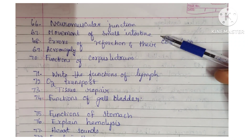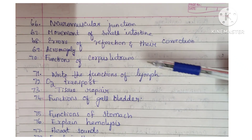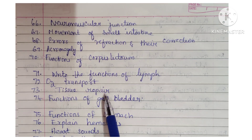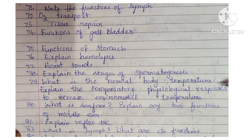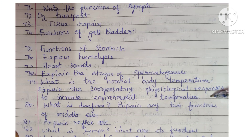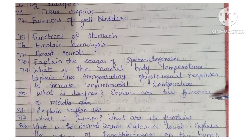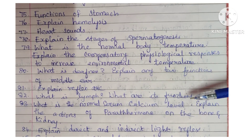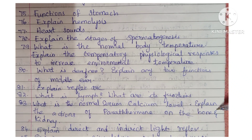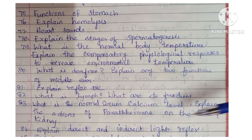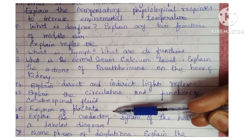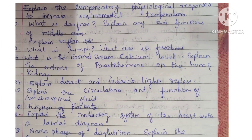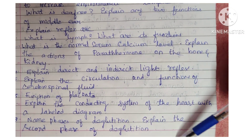Additional physiology topics: neuromuscular junction, movements of small intestine, errors of refraction and their correction, acromegaly, functions of corpus luteum, functions of lymph, oxygen transport, tissue repair, functions of gallbladder, functions of stomach, hemolysis, heart sounds, stages of spermatogenesis, normal body temperature and physiological responses to increased environmental temperature, deafness, functions of middle ear, reflex arc, what is lymph and its functions, normal serum calcium level, actions of parathormone on bone and kidney, direct and indirect light reflex, circulation and functions of cerebrospinal fluid, functions of placenta, conducting system of heart with a labelled diagram, and phases of deglutition.